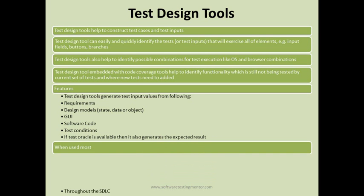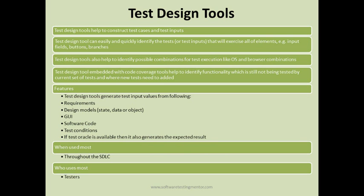These tools are used mostly throughout the software development life cycle, primarily by testers — especially senior testers. Some examples of test design tools are All-Pairs testing and ACTS, which is mainly for combinatorial test design. There is also PICT from Microsoft, and Hexawise, which also provides test design tools. Based on the input you provide — such as fields, buttons, and branches — they generate the test cases you need.